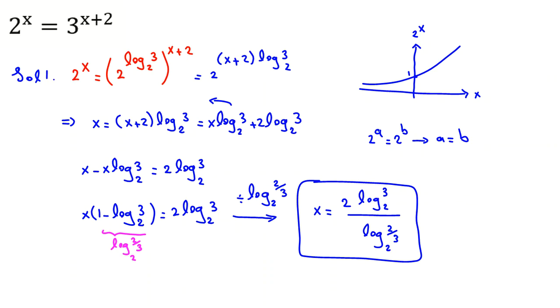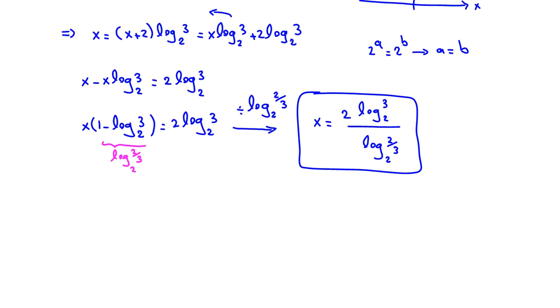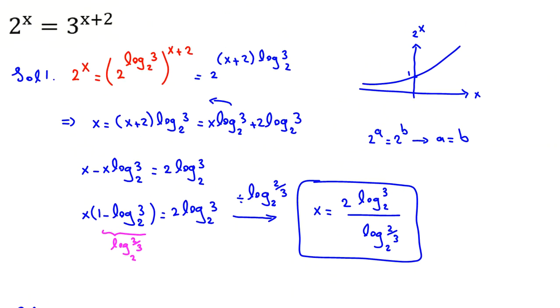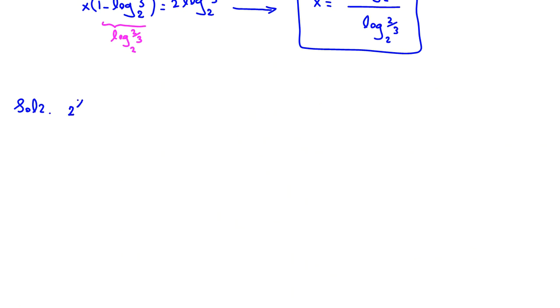Now let's solve the second solution and we should reach the same answer. Solution number 2. The main problem is 2 to the x equals 3 to the x plus 2. We take log from both sides with equal basis. In logarithm, we know that log a to the x equals x log a. So if you apply it here, it will be x log 2 equals x plus 2 log 3.